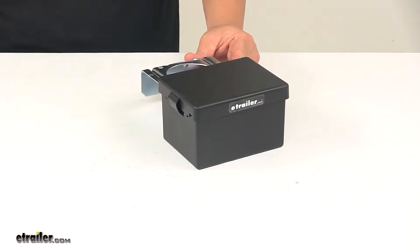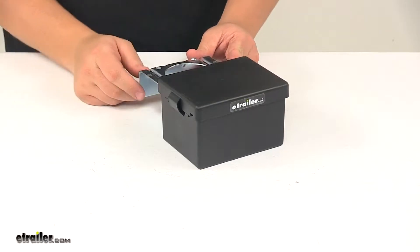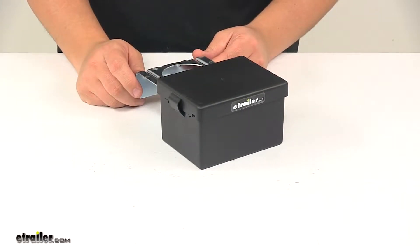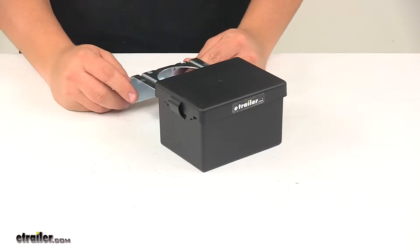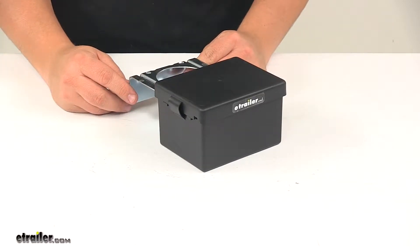Today we're taking a look at the replacement battery box for breakaway kits. This replaces the battery case that came with your CURT SoftTrack 2 trailer breakaway kit, part number C52028 or C52026.